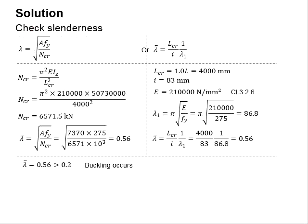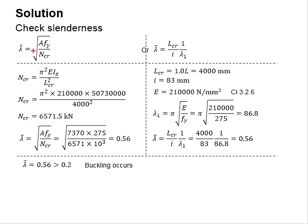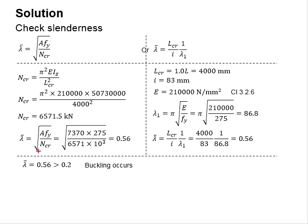Next, you need to check for the slenderness ratio. There are two equations for you to determine the slenderness. Both are applicable and they should give you the same result. You may choose to use either one of them which you feel is suitable for you. It is found that the slenderness ratio lambda bar is equal to 0.56, which is more than 0.2. With that, you know that buckling is going to occur and there will be reductions in the axial resistance.